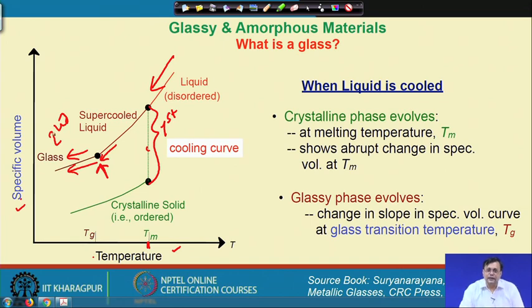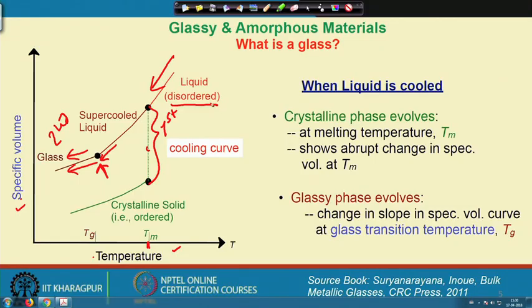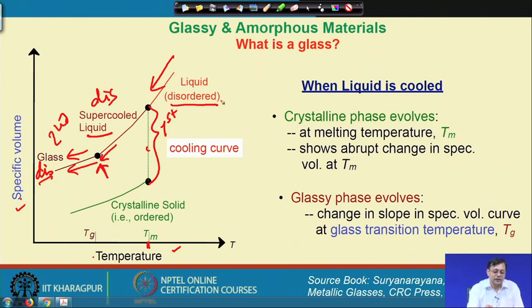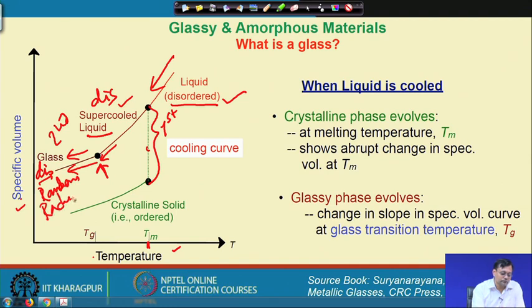It is important to remember that the liquid, the super-cooled liquid, and the glass are all disordered phases. However, the glass is a more randomly packed structure than the liquid or super-cooled liquid. The glass has more and more random packing compared to either the liquid or super-cooled liquid phase.